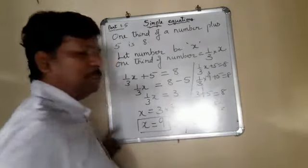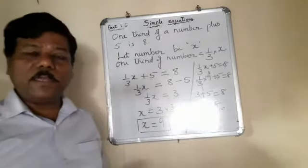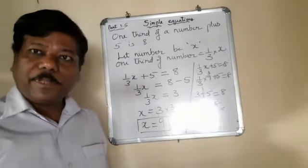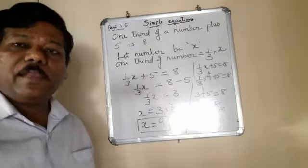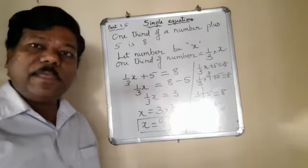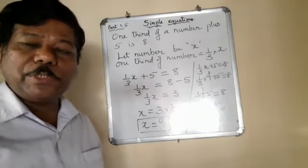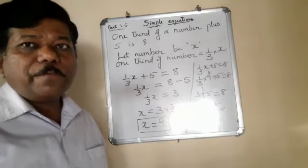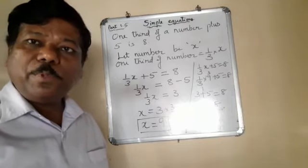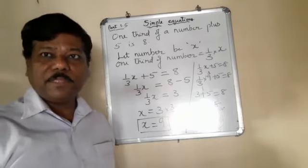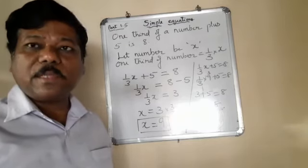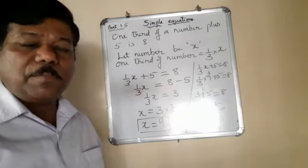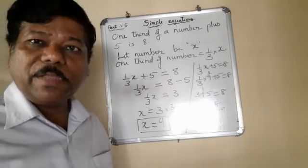So therefore, our answer is correct and is verified by substitution. So this is how we can find out the answer to a simple equation by your use of transposing method. I hope you have understood this with the example. Next class, we are going to deal with more examples and we will try some more questions. Thank you and have a nice day.